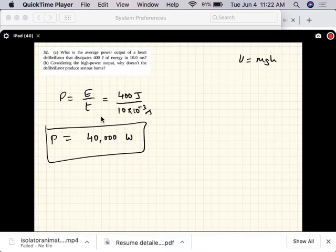40,000 watts. You need 1,000 watts to run a home in the U.S., it's close to 1,500 watts, 2,000. So here's the power that can run 40 homes. So the next question is, consider the high power output, why doesn't the defibrillator fry the guy instead of saving him? Why didn't you kill him is the question.